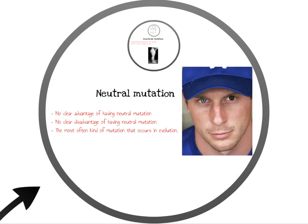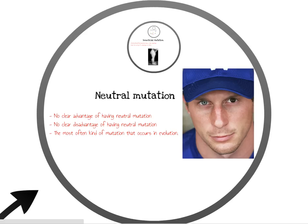An example of neutral mutation is something as simple as having two different colored eyes. There's no clear advantage or disadvantage for having different colored eyes, so genetic modification in the DNA that resulted in having different colored eyes would be classified as a neutral mutation. For example, there's a major league baseball player with different colored eyes. His eyes don't affect his play because he plays in one of the top baseball leagues in the world.